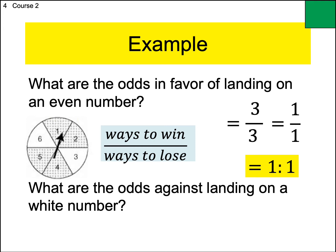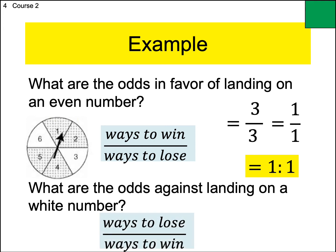What are the odds against landing on a white number? Odds against are lose over win. White number means you win — there are two white numbers. That leaves four ways to lose. Four over two reduces to two over one, so two to one odds against. You're more likely to lose this game because the lose number is bigger than the win number. Odds against are typically the most challenging — just remember, the thing the problem defines as winning always goes in the 'win' position.